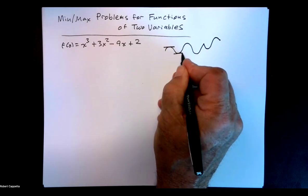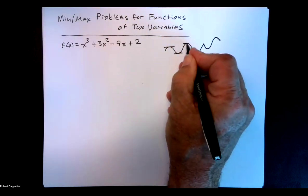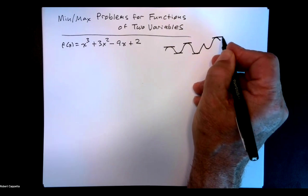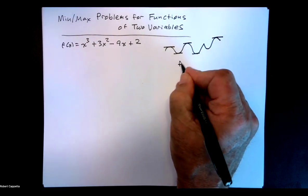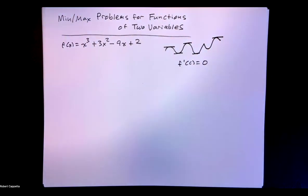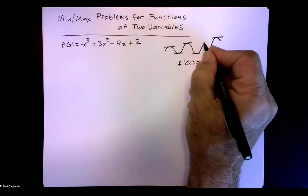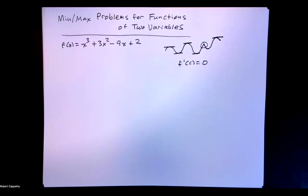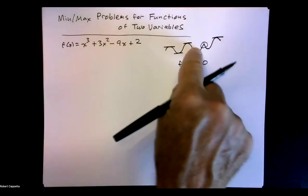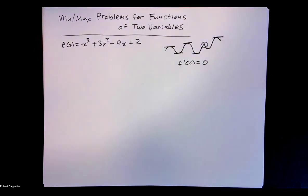Notice most of these are values that have horizontal tangents. So those are points with critical values such that f prime of c equals zero. That's our first strategy. And then this one is a place where the first derivative doesn't exist. So those are the two cases, but we're going to focus on the case where the first derivative is zero — places with horizontal tangents, therefore possible locations for mins and maxes.